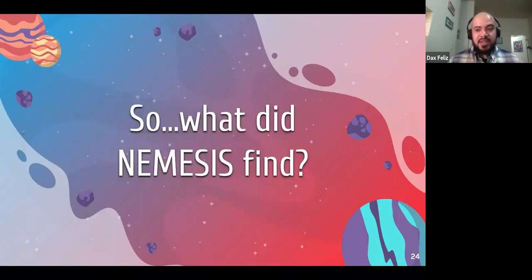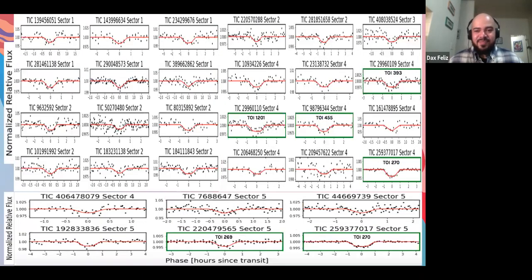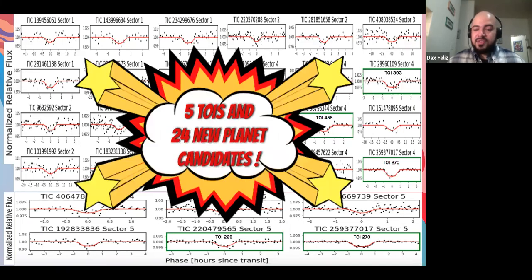So that was a lot of talk about what Nemesis is, what it does, what did we actually find, right? That's why we're all here. So here's a gallery of all of the transit planet candidates that we produced for the first five sectors of TESS. So the ones that have green borders are already flagged in the TOI catalog. So we were able to recover TOIs 269, 270, 393, 455, and 1201. So in total, we found five TOIs and 24 new planet candidates that were not previously detected anywhere else. So that's really exciting.